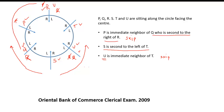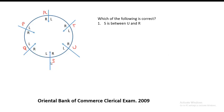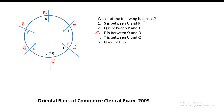Once you have fixed these positions, you can find answers to any questions asked in the examination. Generally five questions are asked. The first question is: which of the following is correct? S is between U and R — not correct, it is between Q and U. Q is between P and T — not correct. P is between Q and R — yes, P is between Q and R, so the third option is correct.